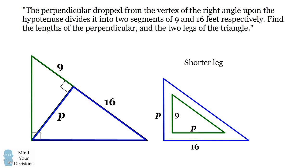So we can set the ratio of the shorter leg to the longer leg of each triangle equal to each other. In the green triangle we have 9 divided by p and in the blue triangle we have p divided by 16. We can cross multiply these fractions to get p squared is equal to 9 times 16 which equals 144. This means p is equal to the positive square root of 144 which is 12.